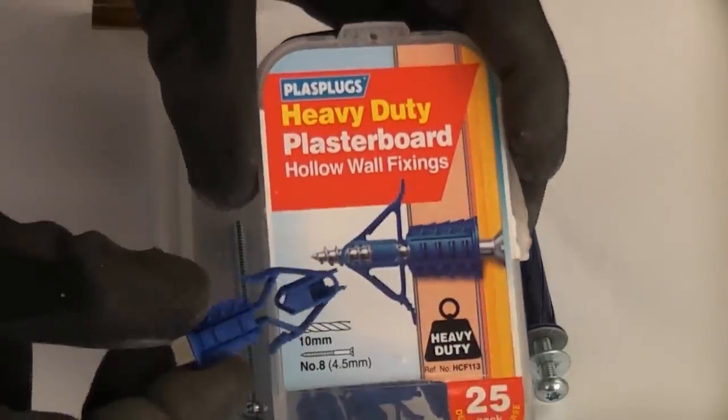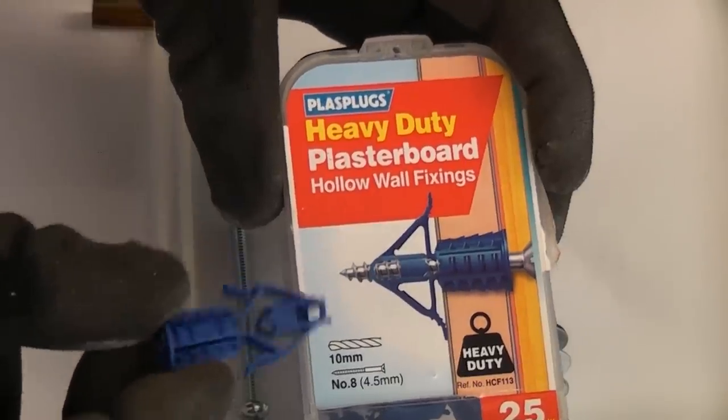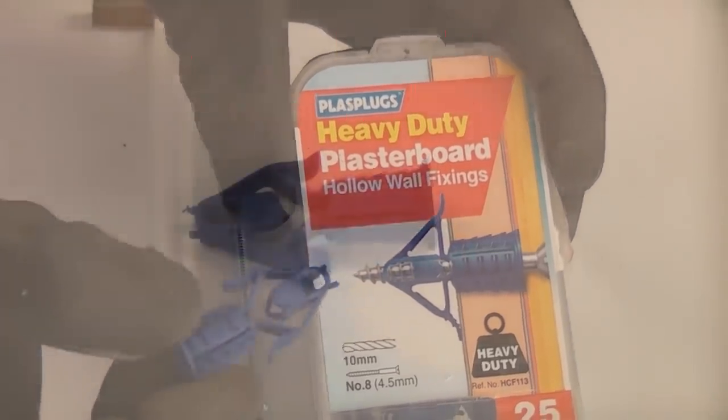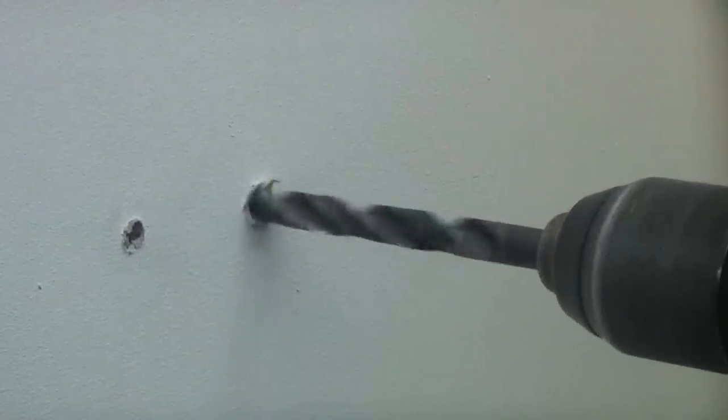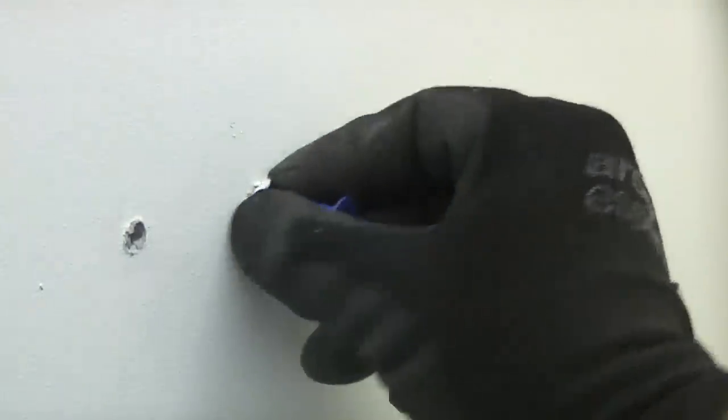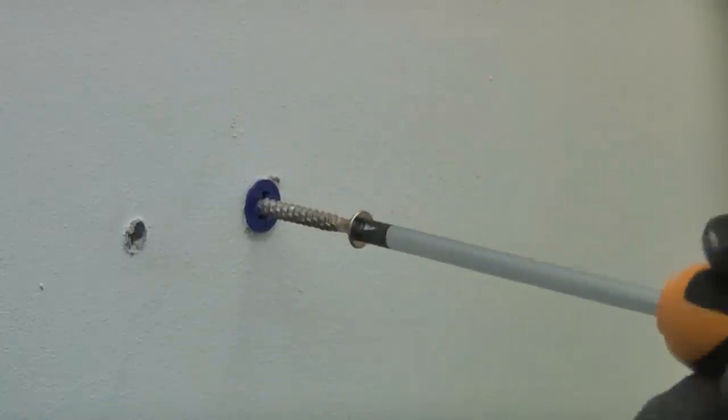I'm now going to try the Plasplugs Every Duty plasterboard fixings. I must say that I've tried these about 10 times, and every time they have never worked. I'm now going to drill a 10mm hole. So I'm going to push that through the hole, and again I'm going to take a number eight wood screw and screw that directly into the center of the fixing. You can see what happened there - it just completely broke in pieces. So you can see that fixing was pretty much useless.